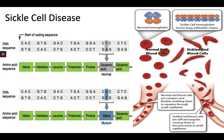What causes sickle cell disease? Mutations in the HBB gene cause sickle cell disease. The HBB gene codes for beta-hemoglobin. Hemoglobin consists of four protein subunits — typically two subunits called alpha-globin and two subunits called beta-globin. In people with sickle cell disease, at least one of the beta-globin subunits is replaced with hemoglobin S. In sickle cell disease specifically, hemoglobin S replaces both beta-globin subunits. Hemoglobin S results when glutamic acid — the amino acid at the sixth position of beta-hemoglobin — is replaced by a different amino acid, valine.